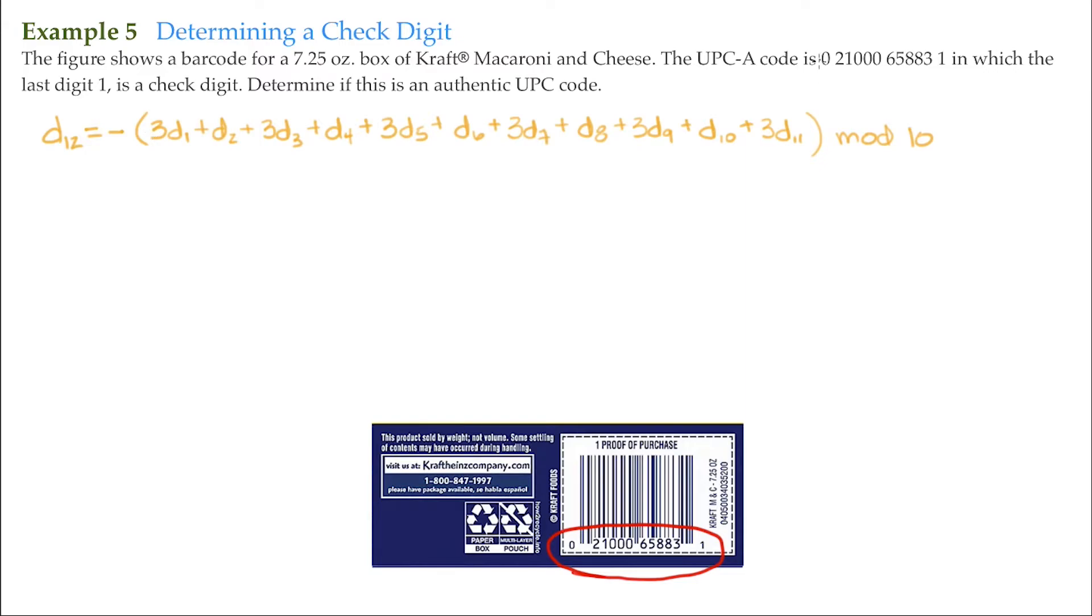All we have to do is put in the digits. The first digit is zero, 3 times zero is zero. Two becomes 2. One, 3 times 1 is 3. Zero, zero, and zero, so these next three are going to be zero.